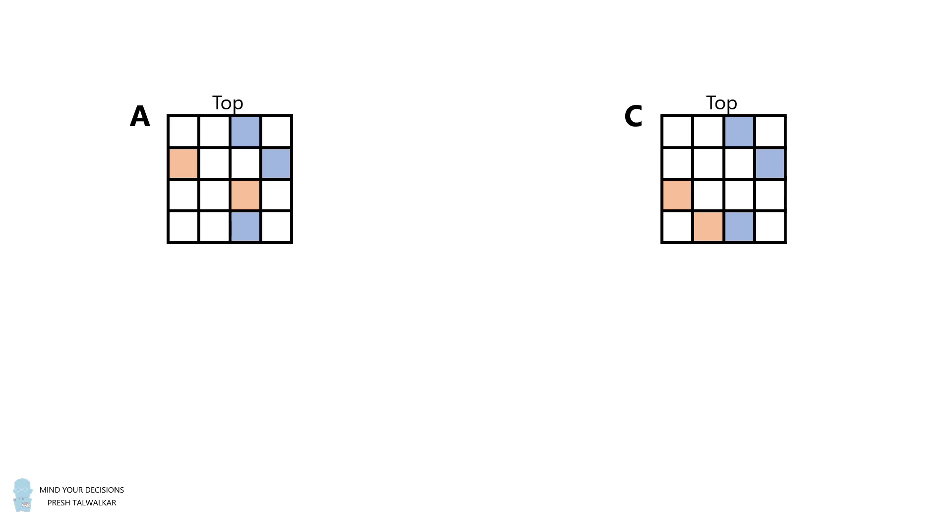Because if grid C was the correct grid, then grid A would have to have exactly one square different from grid C. So we know that neither A nor C can be the correct answer.